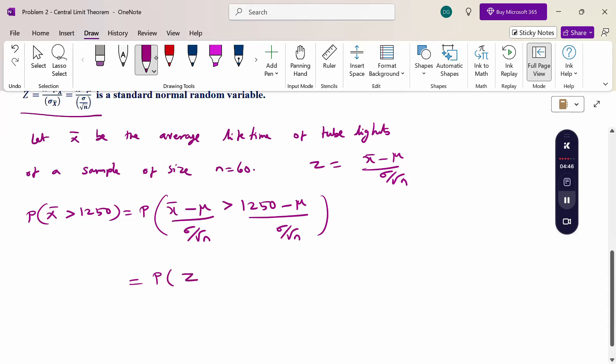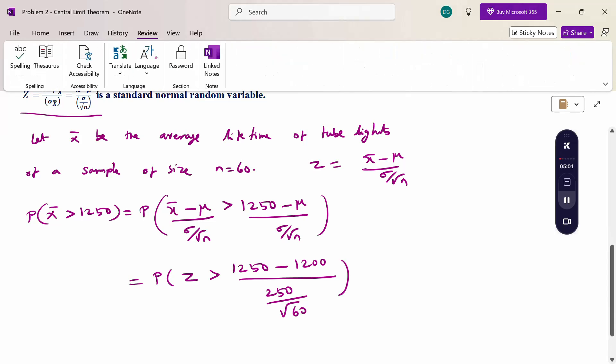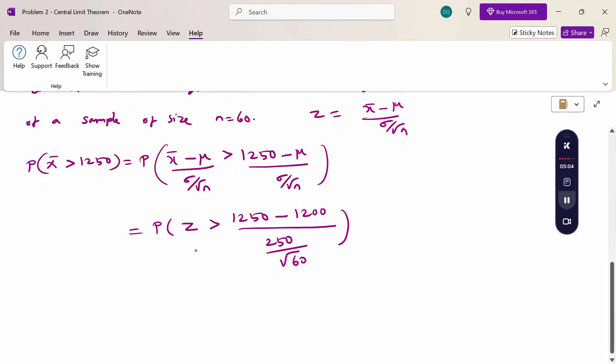Therefore, probability of z greater than (1250 - mu)/(sigma/sqrt(60)), where mu is 1200, sigma is 250. Now simplify using calculator. Probability of z greater than (1250 - 1200)/(250/sqrt(60)) = 50/(250/sqrt(60)). Using calculator the value is 1.55.